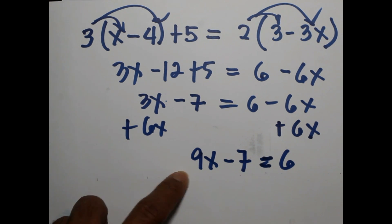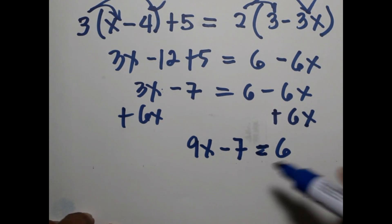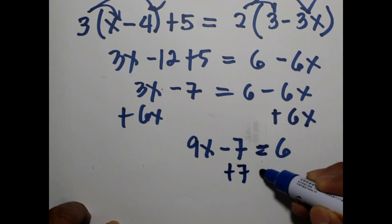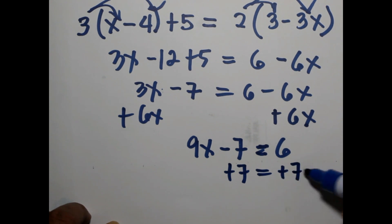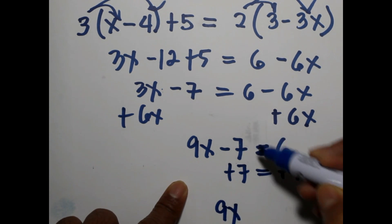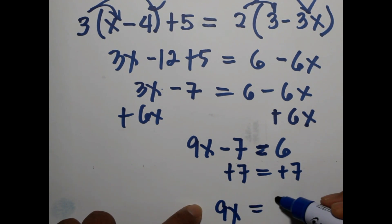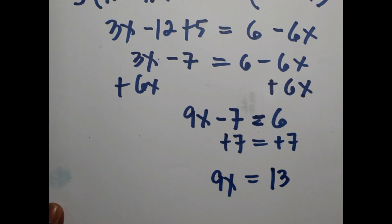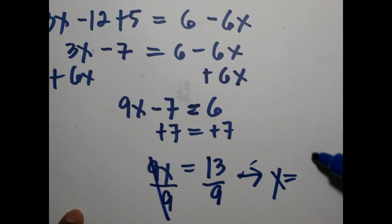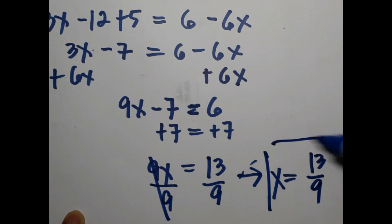So we have a new equation: 9x minus 7 equals 6. This time we'll eliminate negative 7 by adding both sides by 7. So we have 9x equals 6 plus 7, which is 13. What we'll do now is divide both sides by 9, so the value of x is 13 over 9. This is your final answer.